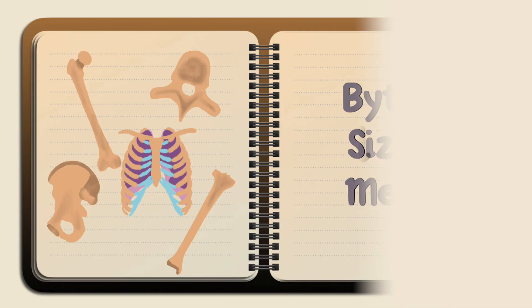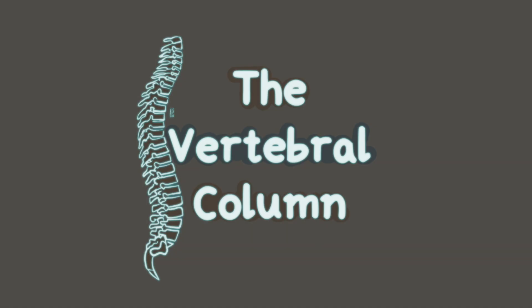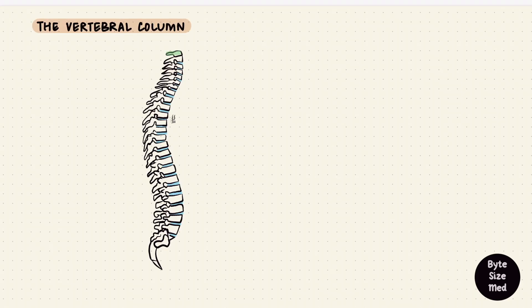Hello, welcome to Bite Size Med. This video is on the vertebral column. The vertebral column is a series of bones called vertebrae, arranged vertically downwards from the cranium. Usually there are around 33 vertebrae and this column is divided into regions. From the top we have the cervical vertebrae, then the thoracic vertebrae, the lumbar vertebrae, sacral and coccygeal vertebrae.